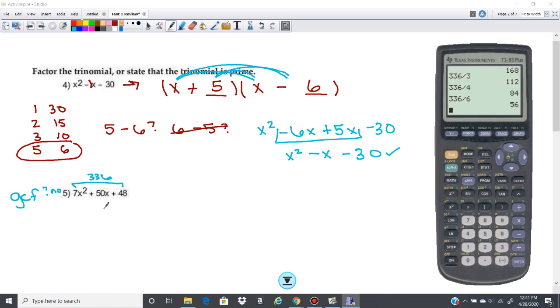336 divided by 4. 4 plus 84 is 88. So that's not going to work. 6 plus 56 is 62. Now, if there was a minus sign, that might work. 56 minus 6. But these are both positive, so keep that in mind. 336 divided by 7. 7 plus 48. We're getting close. That's 55. There you go.